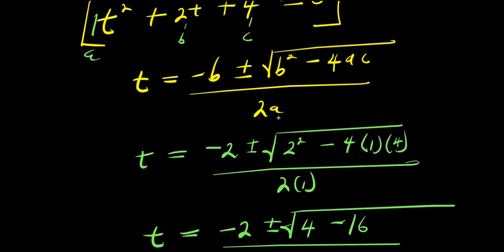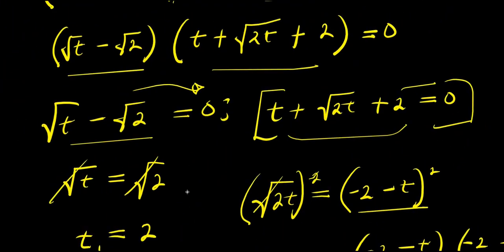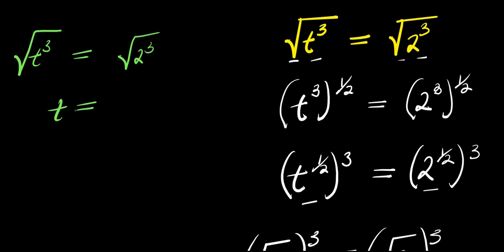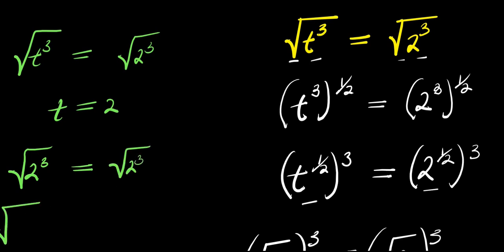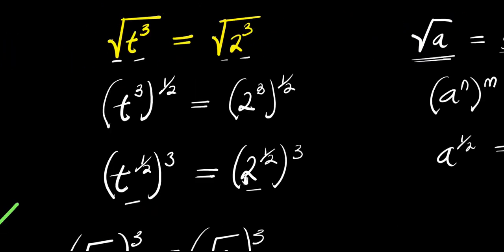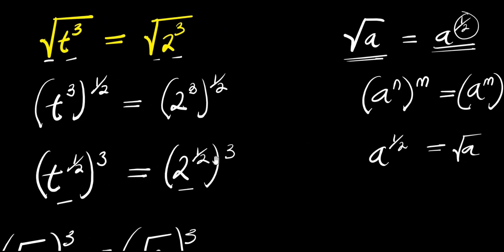We have one real value for t, which is 2. You can check by substituting: if t equals 2, then square root of t power 3 equals square root of 2 power 3, which means square root of 2 power 3 equals square root of 2 power 3. That is square root of 8 equals square root of 8 — confirmed. So these are all three solutions. Thank you and goodbye — don't forget to subscribe and share this video!